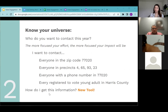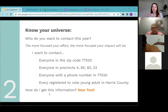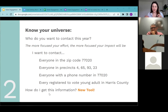Knowing your universe: who do you want to contact this year? The more focused you are, the more focused your impact will be. Think about whether you want to look at your voter universe by zip code, specific precincts, everyone with a phone number in a zip code, or registered voters in a certain age range in the county. Once you've narrowed down who you want to contact, figure out how to get that data. I want to pause and invite Michael to talk about a tool we have available.